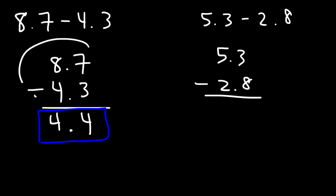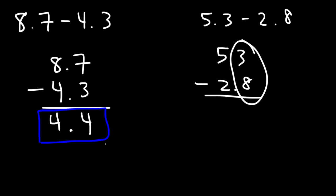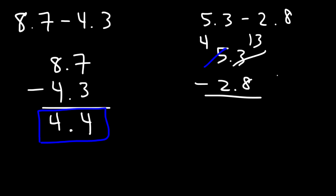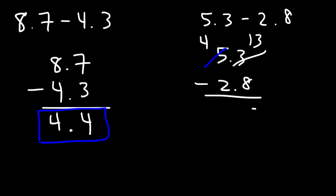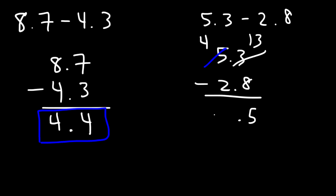The second problem, 5.3 minus 2.8, is a little different because we can't do 3 minus 8 — that gives us negative 5. When you encounter a situation like this, you need to borrow. Borrow a 1 from the 5, so the 5 becomes a 4 and the 3 becomes 13. Now 13 minus 8 is 5, and then 4 minus 2 is 2, giving us the answer 2.5.